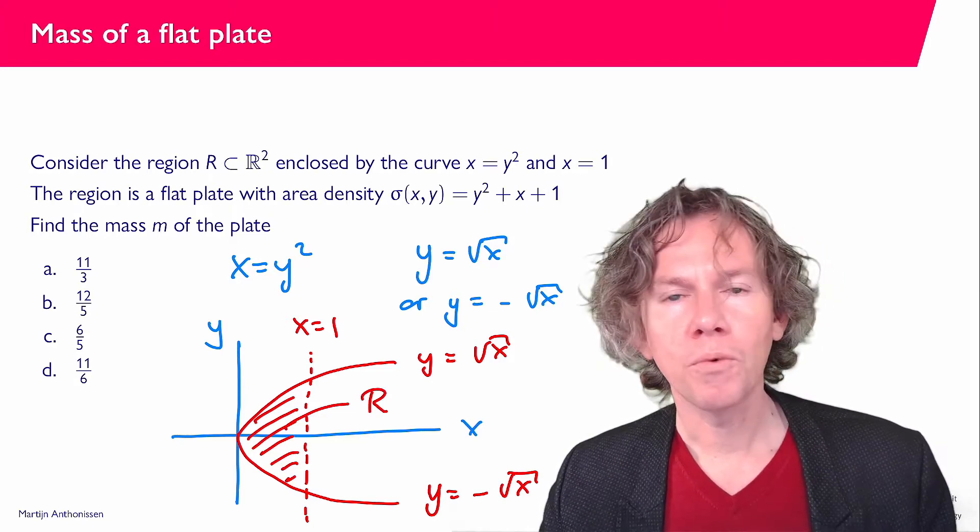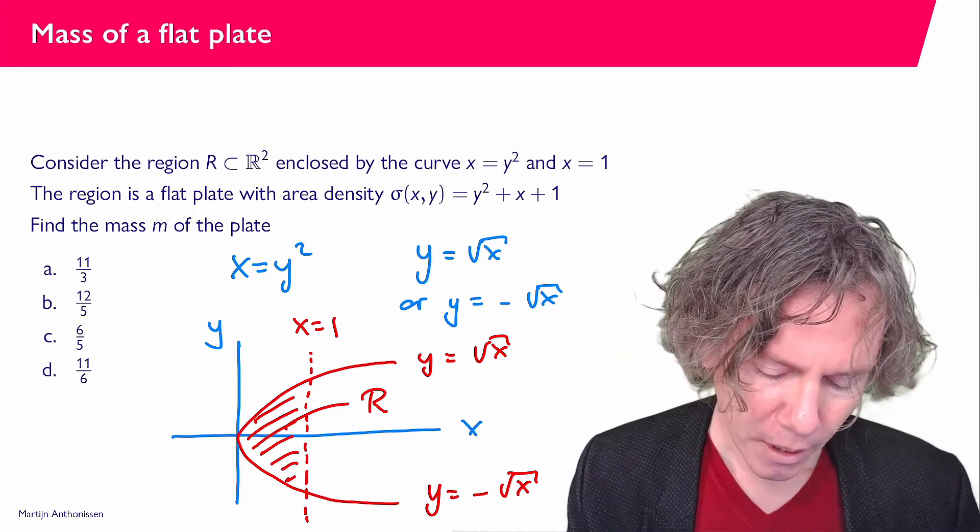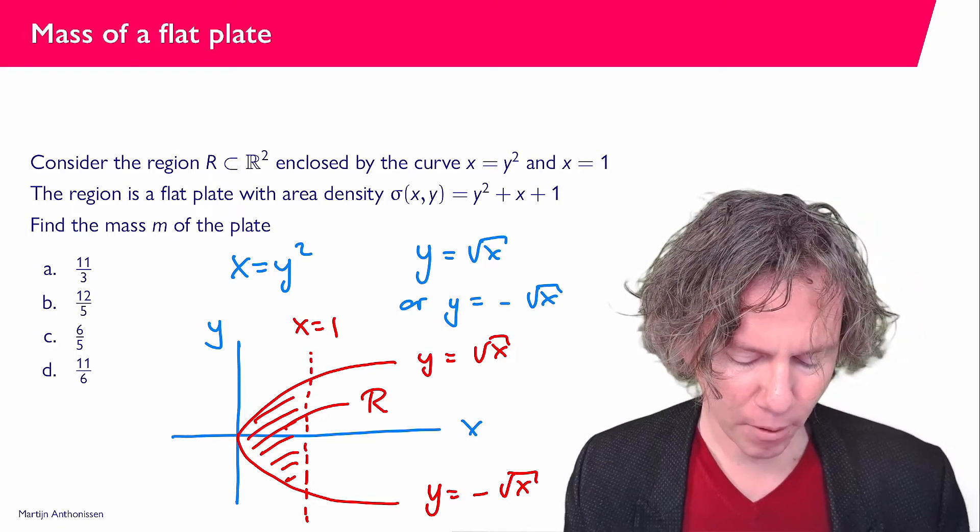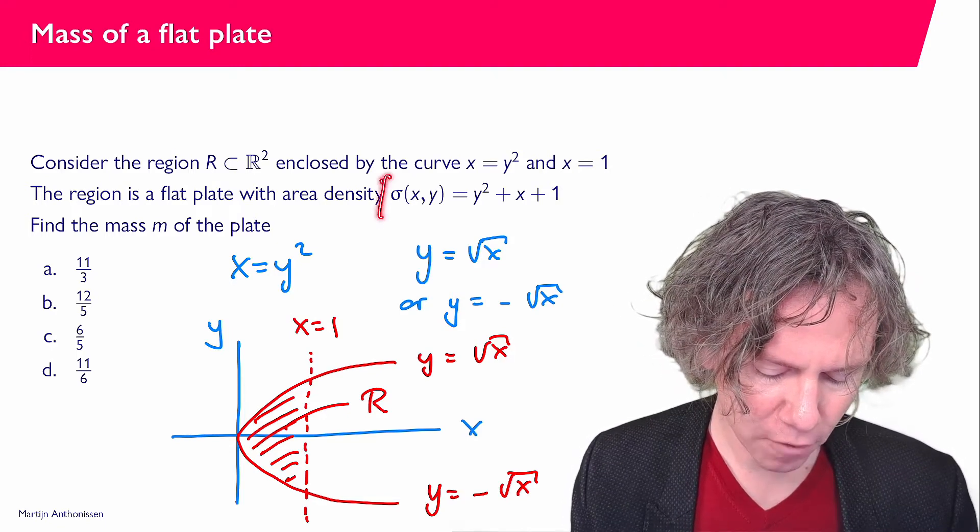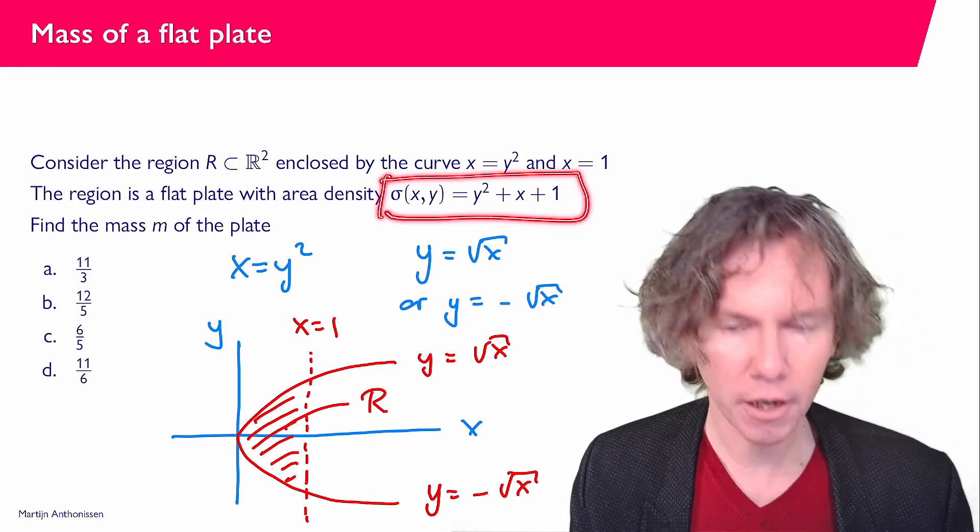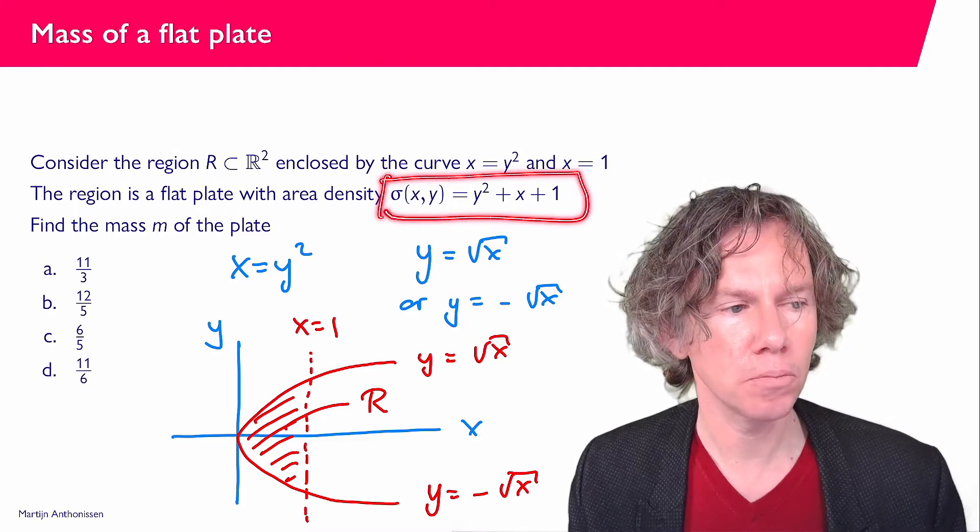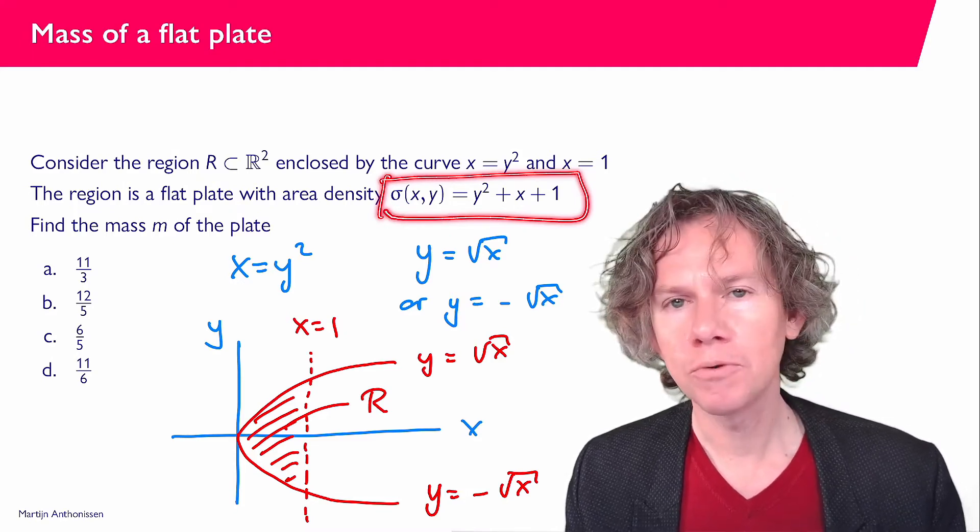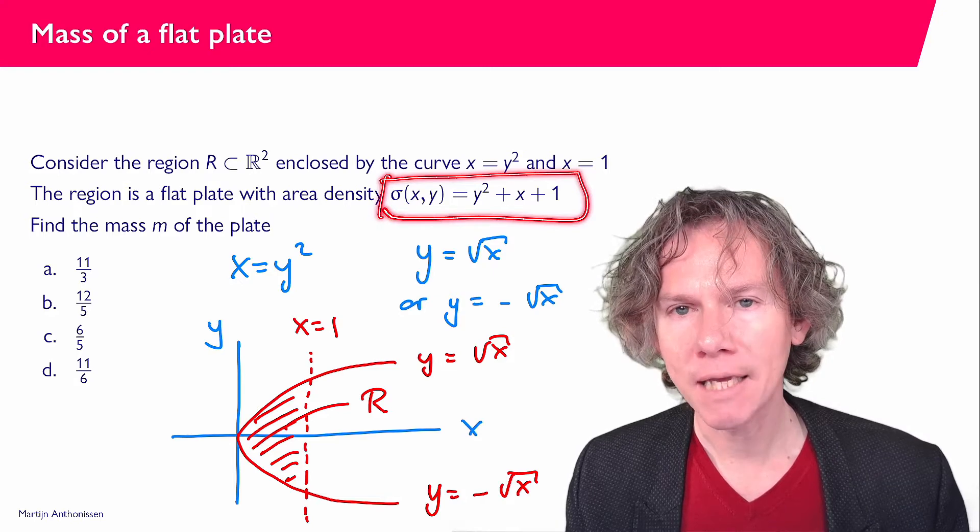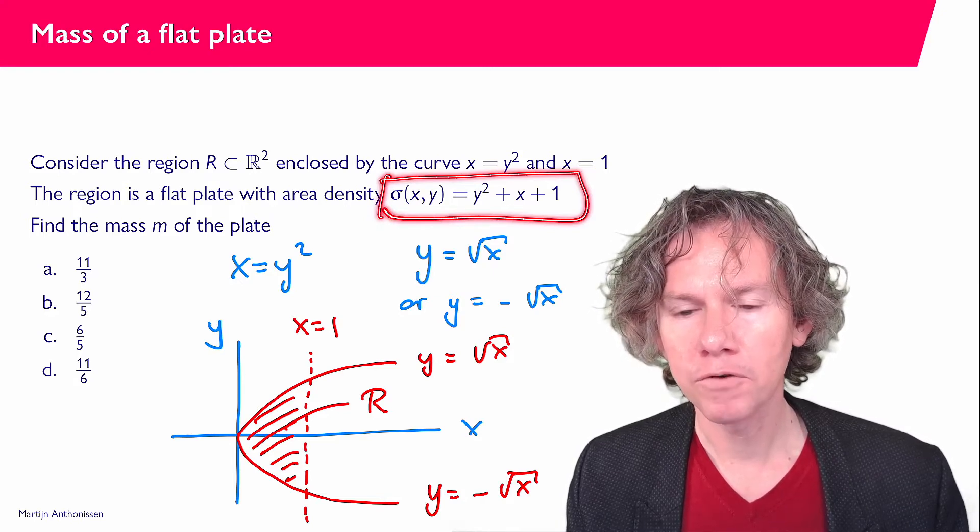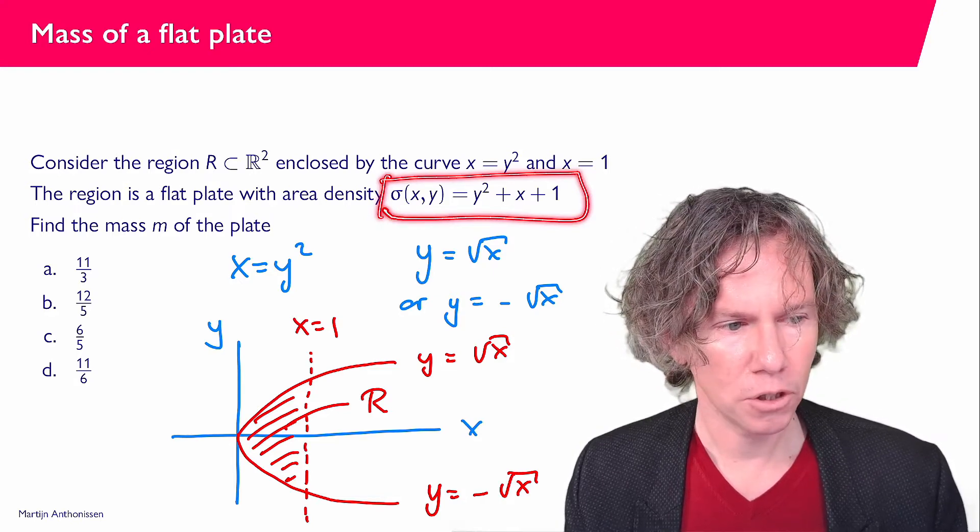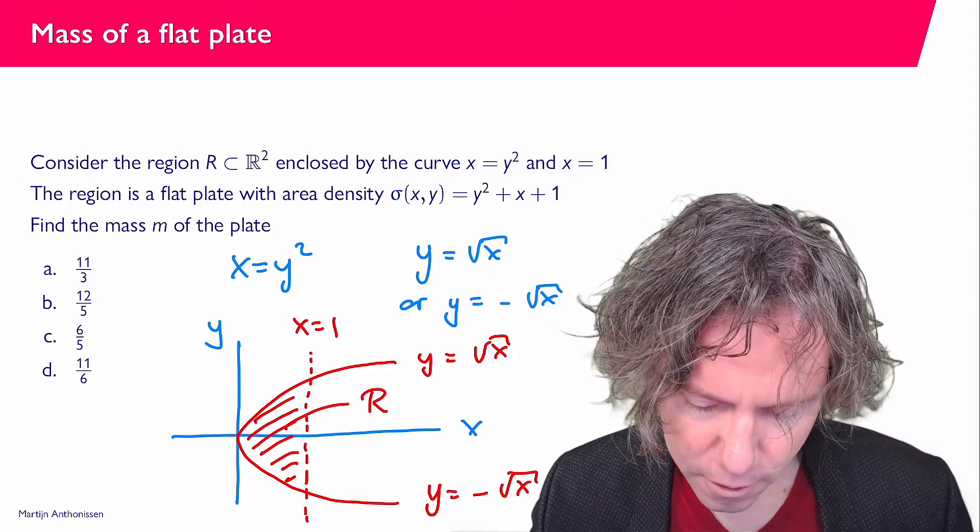And what we need to find now is the mass of the plate and the area density is this function sigma here. Sigma(x,y) is y squared plus x plus 1. So if we want to compute the mass, we have to integrate sigma over this region R. So let's write that down on the next slide.